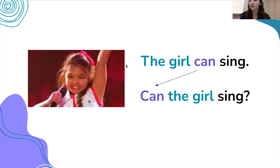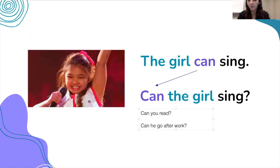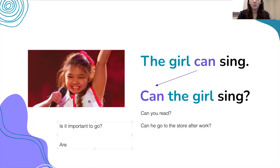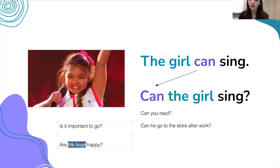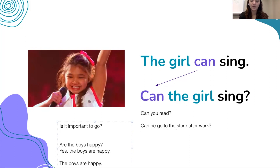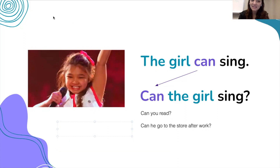Other examples: 'can the girls sing?', 'can you read?', 'can he go to the store after work?' We can also say 'is it important to go?' We use 'are' when we talk about multiple things — 'are the boys happy?' In a response we would say 'yes, the boys are happy,' not 'the boys is happy.' This is the second type of question.